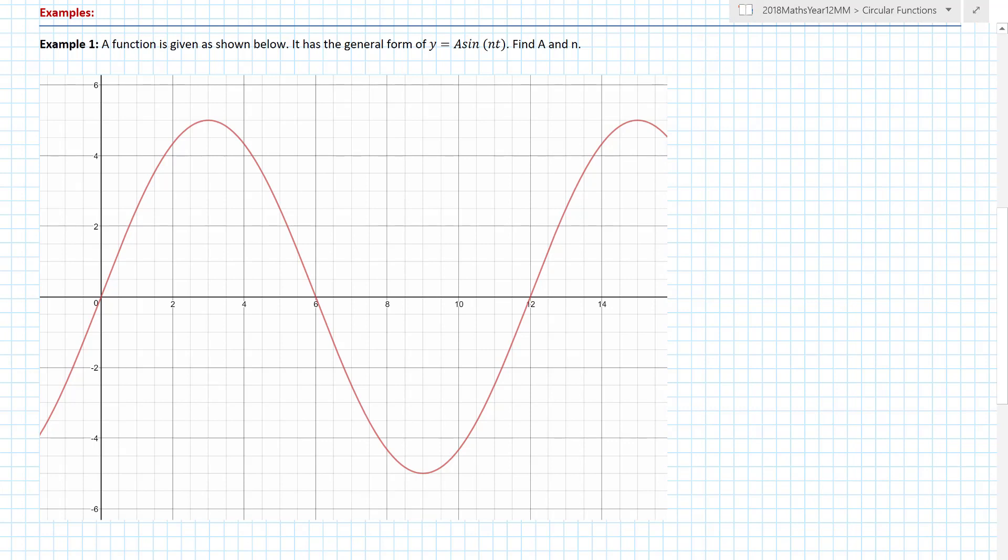Example one: a function is given shown below. It has a general form of y equals a sine nt. Now the good news is they will always tell you what form they want the equation to be in. So in this situation y equals a sine nt, find a and n.